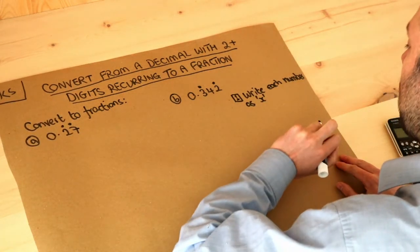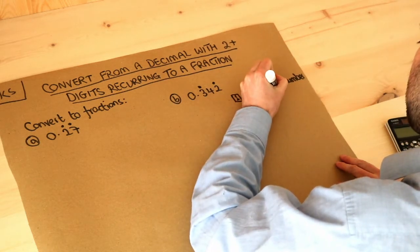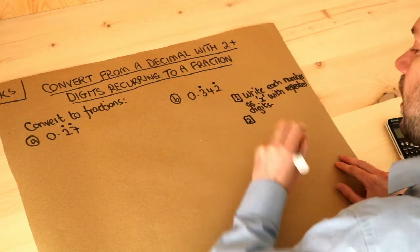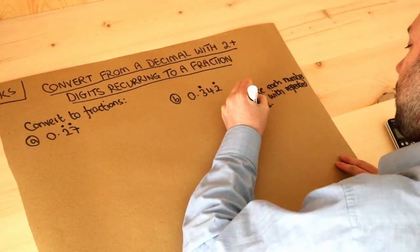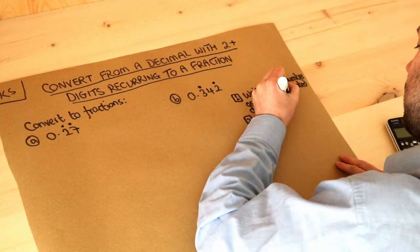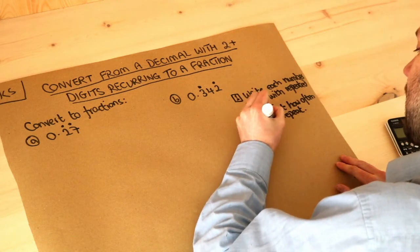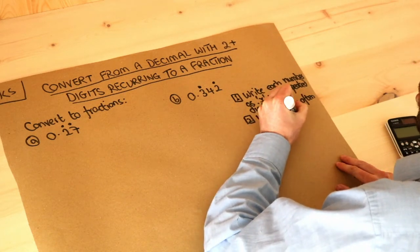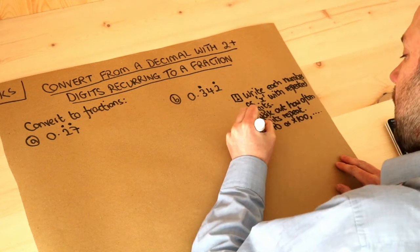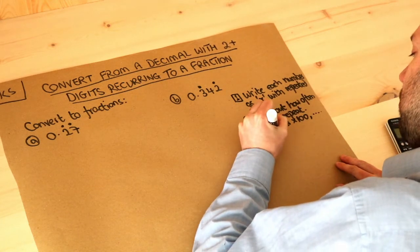Step two is to work out how often the digits repeat, and in response to that we multiply by ten or by a hundred or by a thousand, etc., and then step three is to subtract.